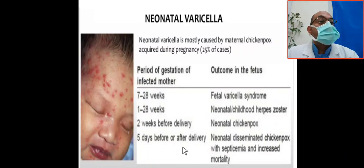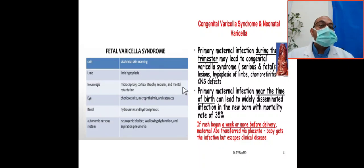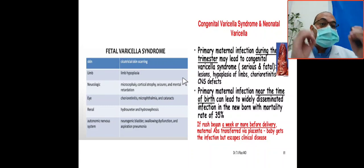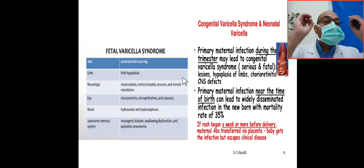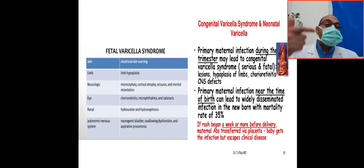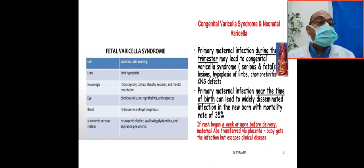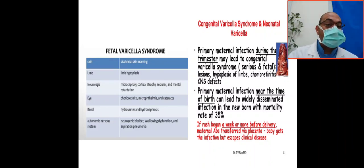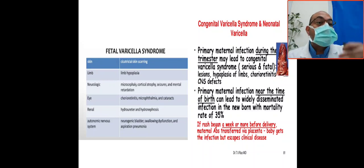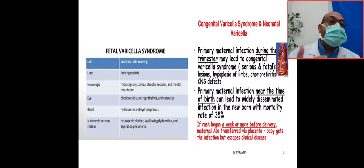Neonatal disseminated chickenpox is associated with septicemia and increased mortality. Fetal varicella syndrome is fatal. It results from primary maternal infection during the first trimester and can lead to congenital varicella syndrome, causing limb hypoplasia, chorioretinitis, CNS infection, and CNS anomalies. Primary maternal infection near the time of birth can lead to widespread disseminated infection with a mortality rate of 35%. If the maternal rash begins one week or more before delivery, maternal antibodies are transferred via the placenta, resulting in attenuated clinical disease in the infant.